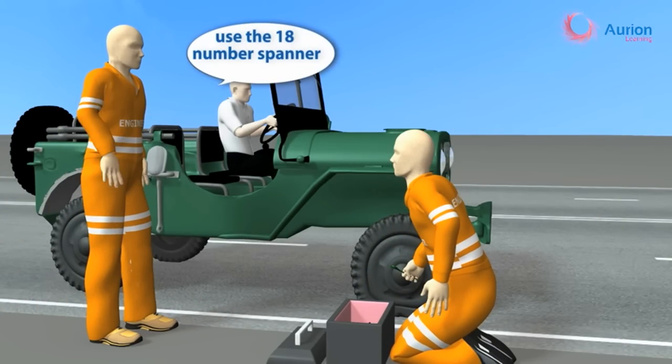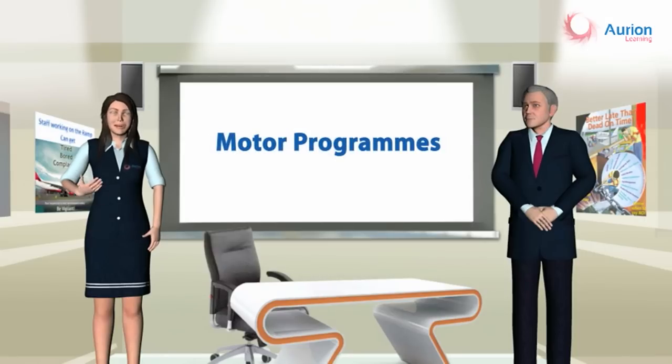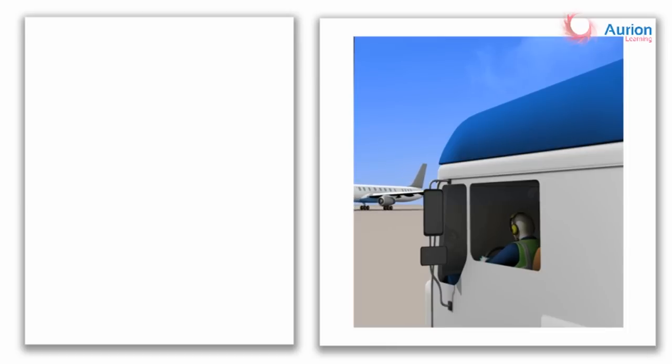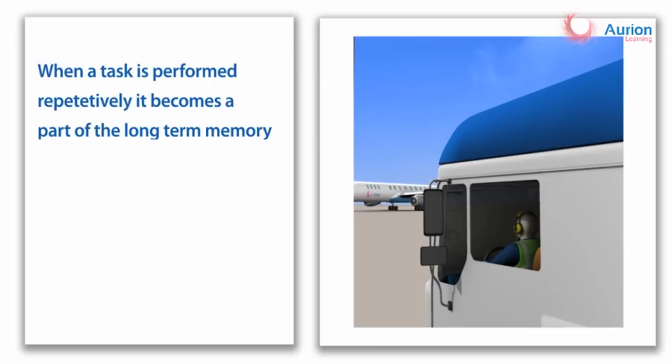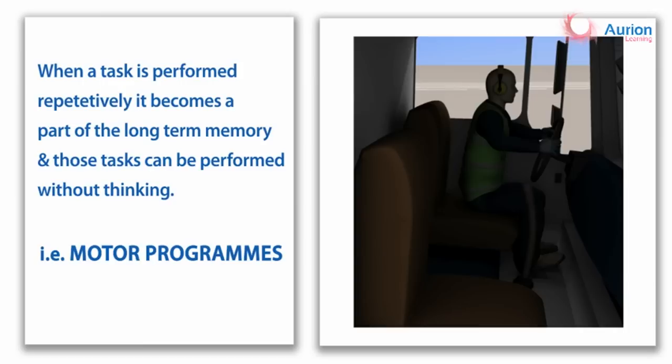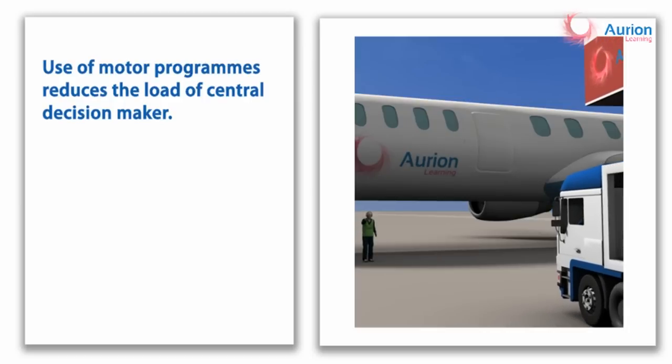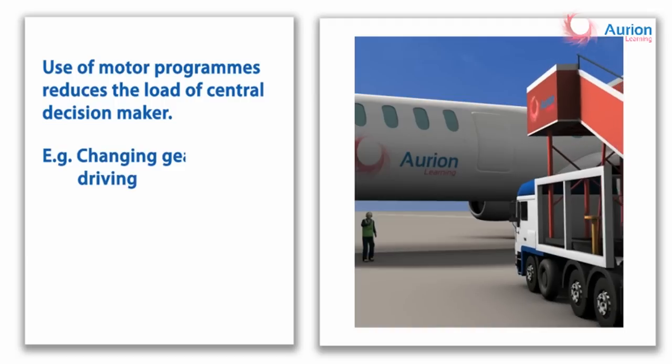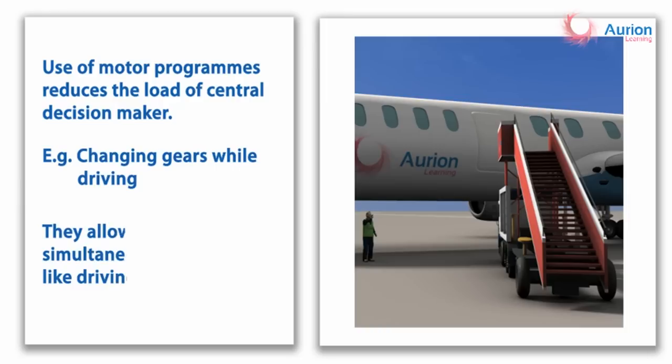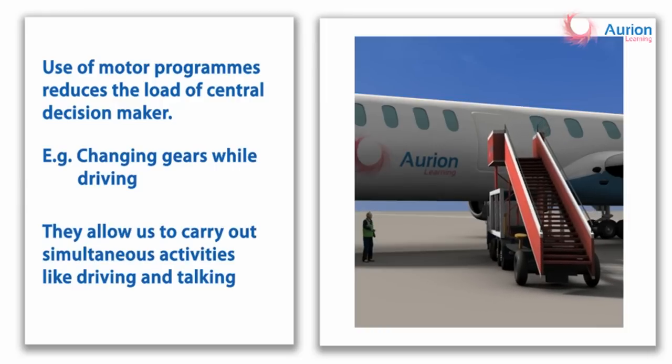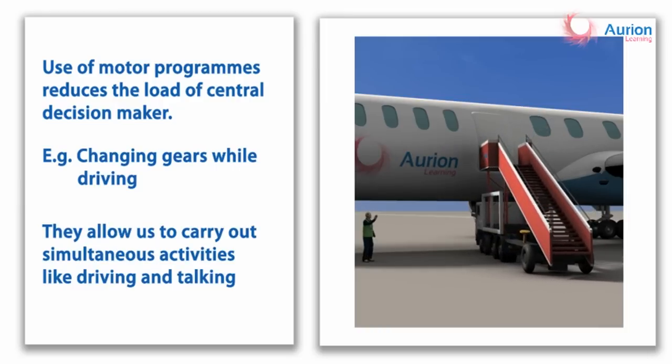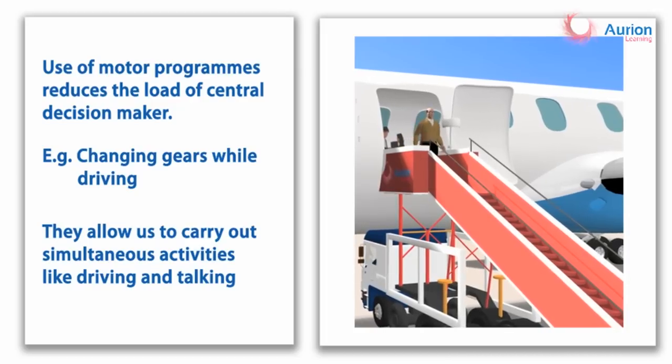So professor, memory is nothing but registering information, storing it, retrieving it when required. But professor, this does not mean that each time we perform an action we have to first think about it, right? Absolutely not. Humans have what is known as motor programs. You see, when we perform any task repetitively, it becomes a part of our long-term memory and we can perform these tasks without having to think about it. For example, when we first start driving we have to think about each step, but once we have learned it we can perform it automatically without giving it any thought.